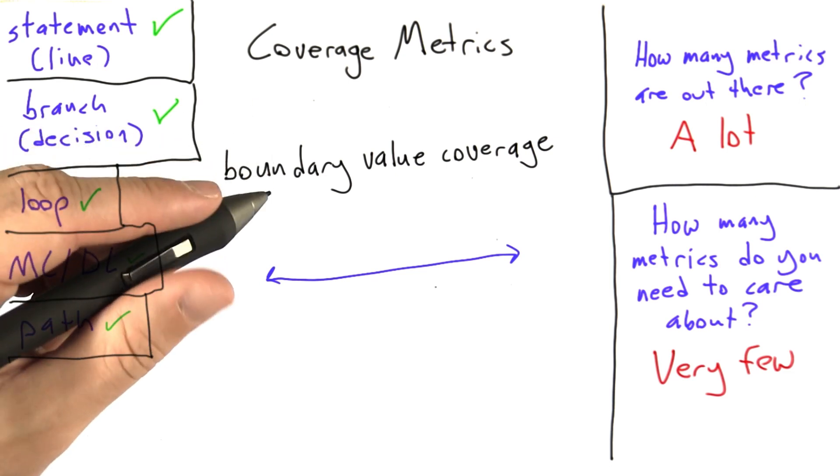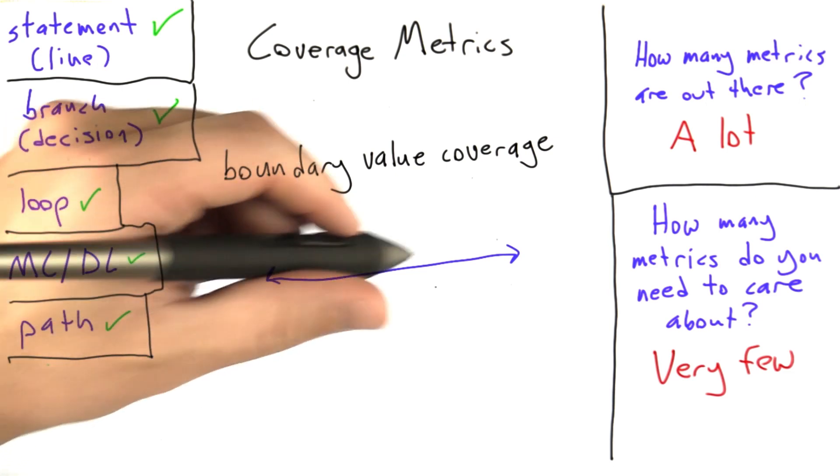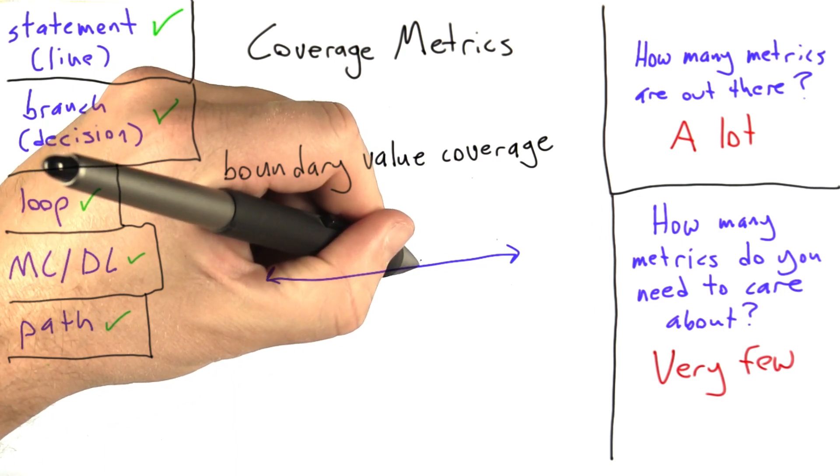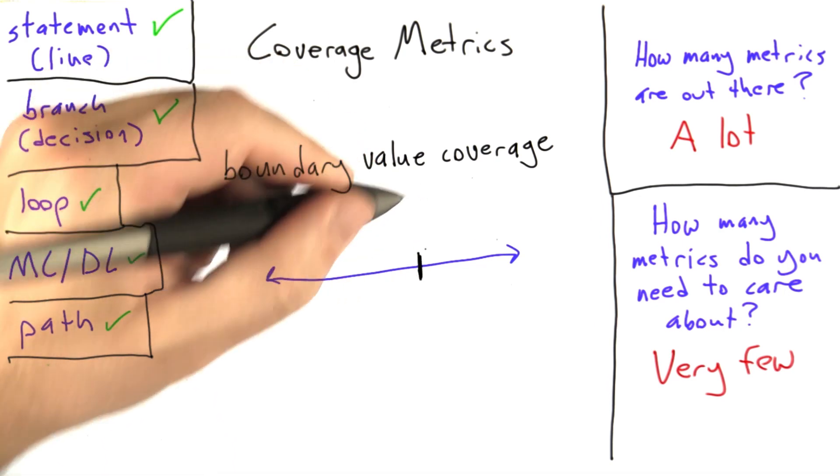What boundary value coverage basically says is, when our program depends on some numerical range, and when the program has different behaviors based on numbers within that range, then we should test numbers close to the boundary.